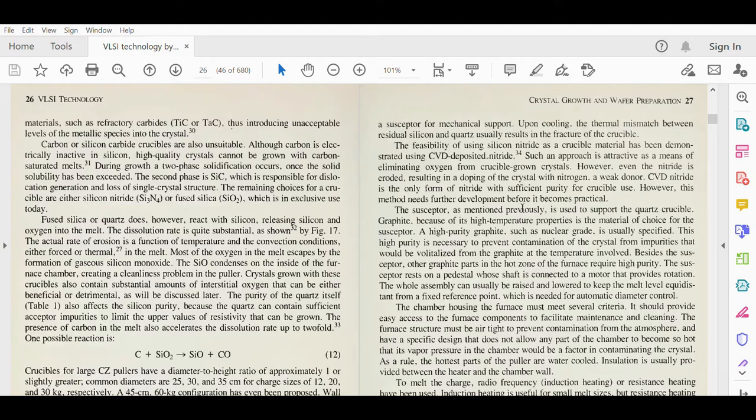The susceptor, as mentioned previously, is used to support the quartz crucible. Graphite, because of its high temperature properties, is the material of choice for the susceptor. For crucible material, we use silicon nitride or fused silica, and for the susceptor we use graphite for its high temperature properties.